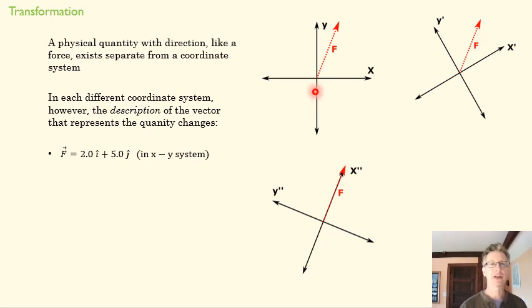But the description of that force F changes in each of these systems. So in this system here, our normal horizontal vertical coordinate system, we might say that F is equal to 2i plus 5j. Two units in the x direction, five units in the y direction.